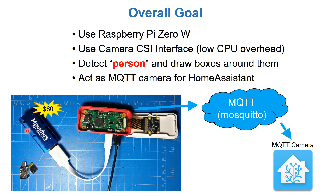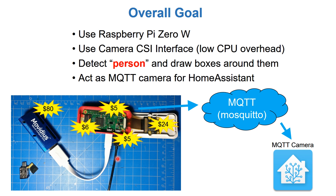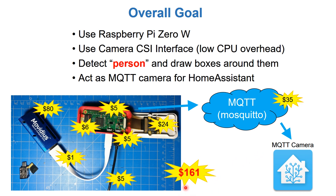The total cost breakdown: the most expensive part is the Movidius neural compute stick at around $80. The Raspberry Pi is $5, the case is another $5, the camera with ribbon cable is $24, the SD card is $6, the OTG cable is $1, and the charger and USB cable is around $5. If you're hosting an MQTT server on a Raspberry Pi 3, that's a minimum of another $35 plus SD card and power supply, bringing the total to around $161.